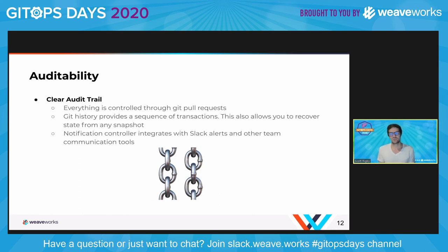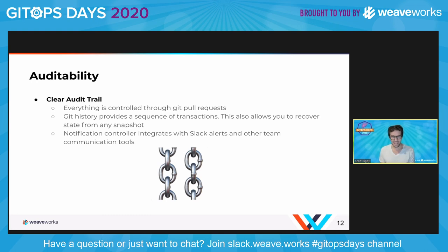This is just a general value of GitOps — you have a clear audit trail. Because all of your changes to your Helm releases and configurations are controlled through pull requests, or at least stored in Git, you can look through Git history and understand exactly what happened, when, and by whom. And if you want to go back, you can revert to your last good commit. That's the general value of GitOps, but it's a really important value to lay on top of using Helm specifically.